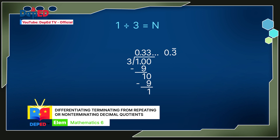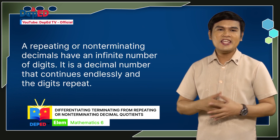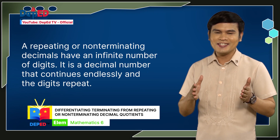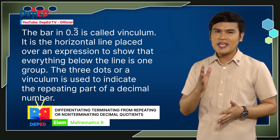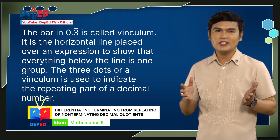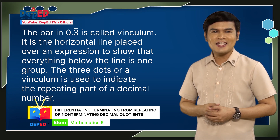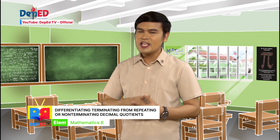So, 1 divided by 3 is 33 hundredths and so on, or 0.3 bar. Therefore, 0.3 bar is a repeating or non-terminating decimal. A repeating or non-terminating decimal has an infinite number of digits. It is a decimal number that continues endlessly and the digits repeat. The bar in 0.3 bar is called a vinculum — the horizontal line placed over an expression to show that everything below the line is one group. The three dots or a vinculum is used to indicate the repeating part of a decimal number. These two examples show the difference between terminating decimal and repeating or non-terminating decimal.